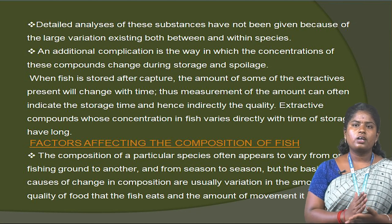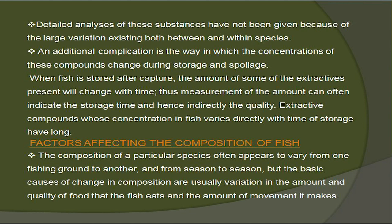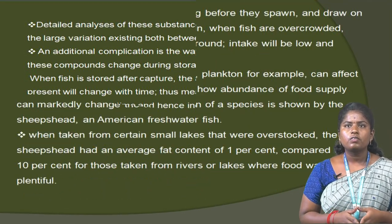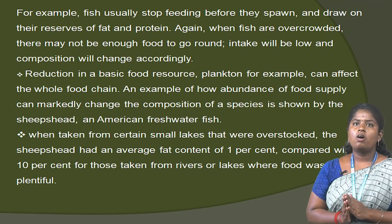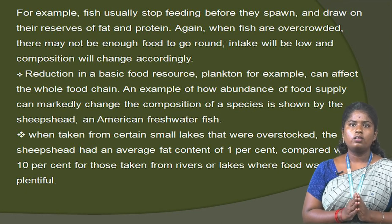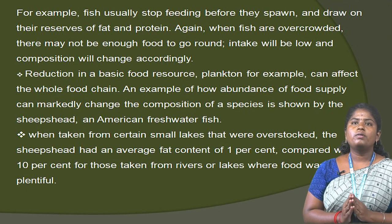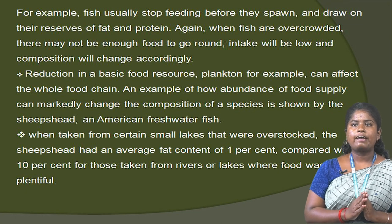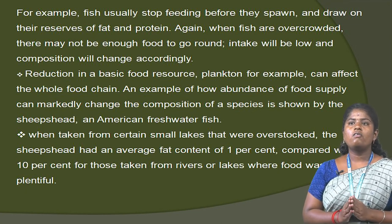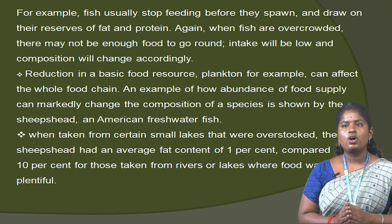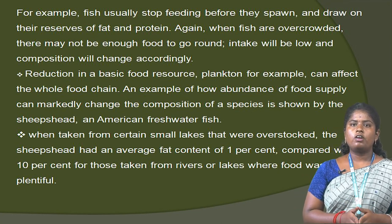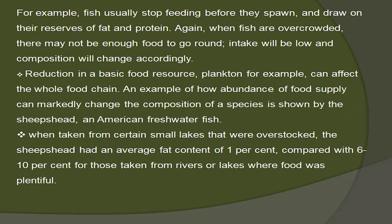Factors affecting the composition of fish. The composition of a particular species often appears to vary from one fishing ground to another and from season to season. The basis of changes in composition are usually variations in the amount and quality of food the fish eats and the amount of movement it makes. For example, fish usually stop feeding before spawning and draw on reserves of fat and protein. When fish are overcrowded, there may not be enough food to go around, so intake will be low and composition changes accordingly. Reduction in basic food resources — plankton, for example — can affect the whole food chain. An example of how food supply can markedly change composition: when fish were taken from certain small lakes that were overstocked, the shad had an average fat content of 1%, compared with 6 to 10% for those taken from rivers or lakes where food was plentiful.